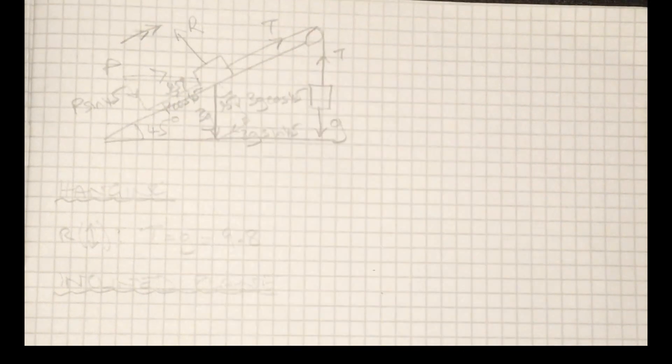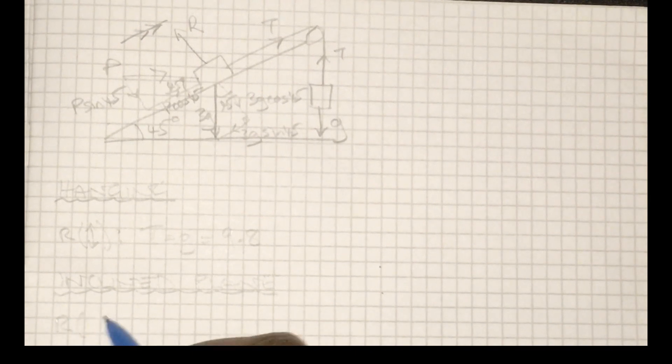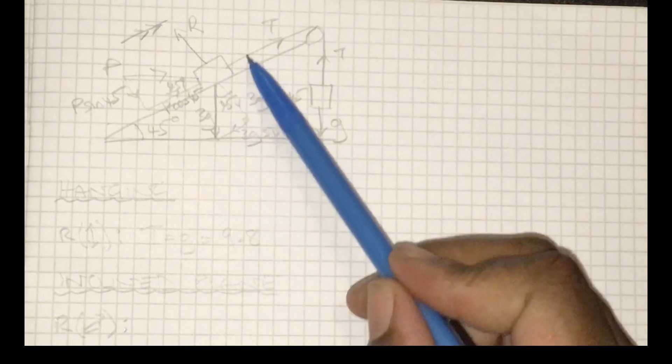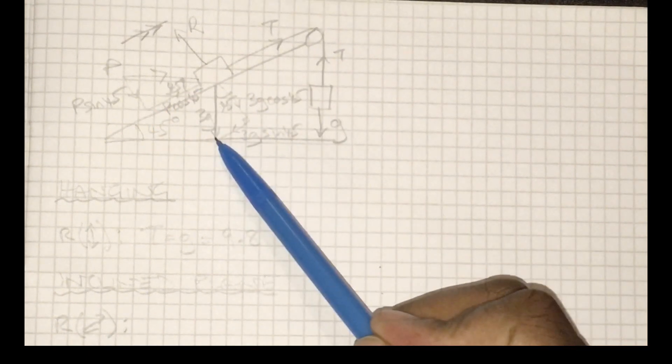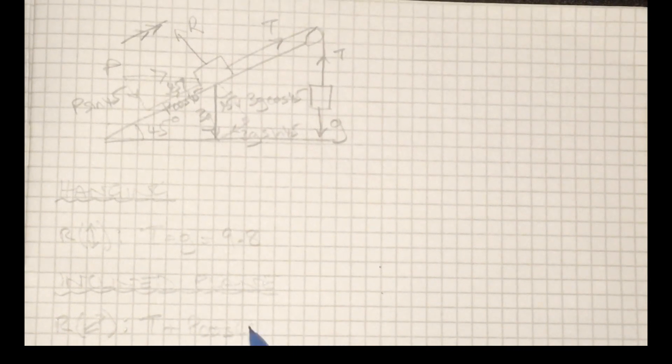So I can actually just resolve parallel to the plane. And if I go ahead and do that, the force in the positive direction is going to be t and also p cosine 45, and that should equal the force in a negative direction, which is the parallel component of the weight.